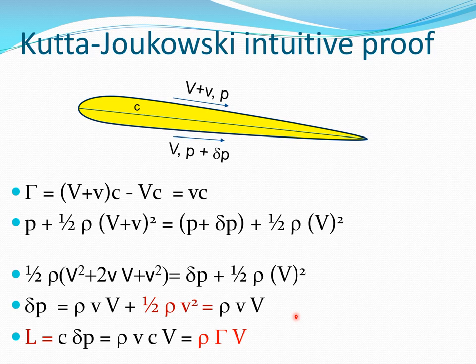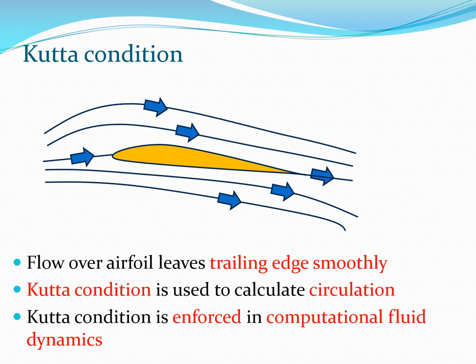This is of course a simplified proof. For a more rigorous and authentic derivation, aerodynamics textbooks and videos provide a proof based on complex number theory, which is elegant mathematically. This is also a beautiful illustration of where complex numbers are applied in practice — the formula L = ρVΓ has been verified extensively by experiments for inviscid flow.